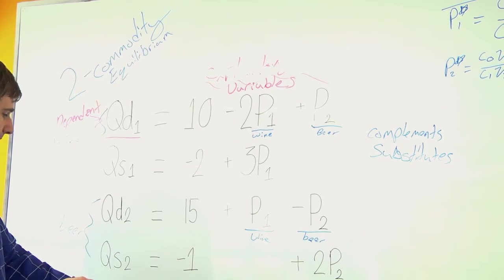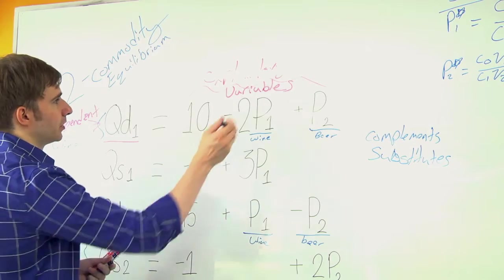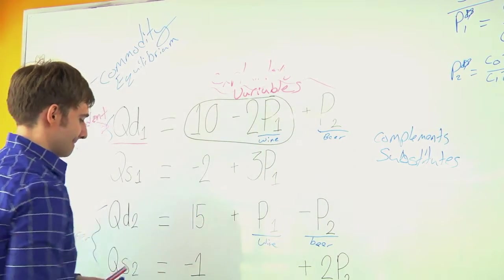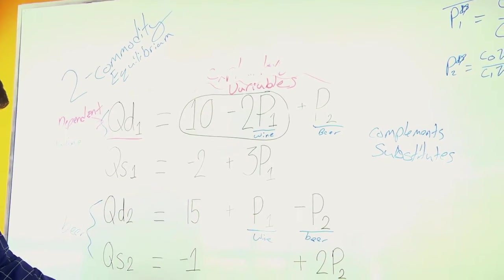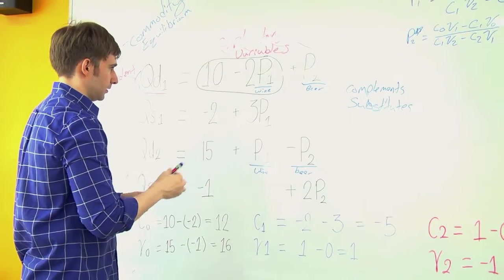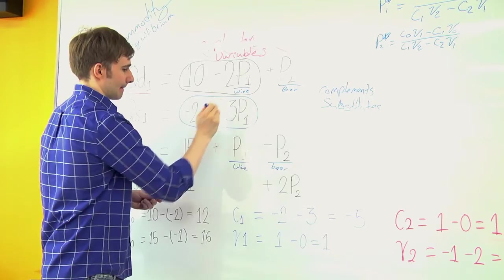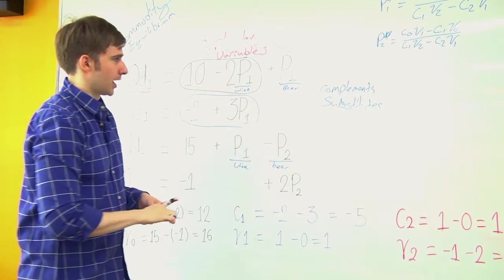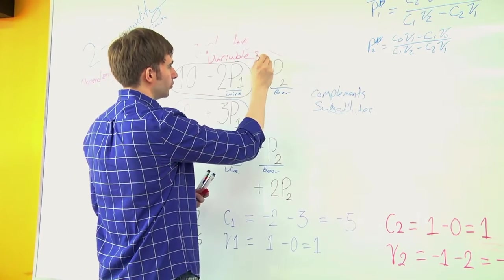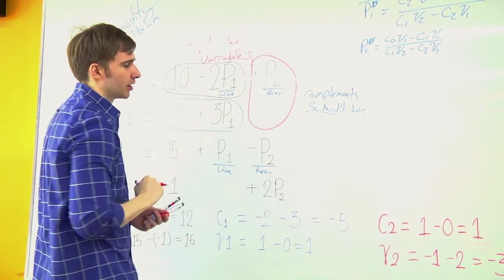So I have a 10 and a negative 2. So it's coming from here. I then have a negative 2 minus 3. So we're using this information. And then I have a 1 minus 0. We're going to use this data. So there's nothing there, so we have a 0.